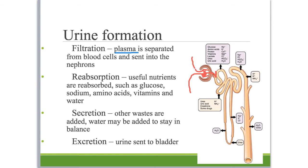The next step is reabsorption, where useful nutrients are reabsorbed back into the body. Glucose is a source of energy the body doesn't want to waste. Sodium, amino acids — important for building proteins — vitamins, and water are all reabsorbed. As we discussed with the digestive system, you produce almost two liters of gastric juices every day, and some of that water is reabsorbed as blood plasma passes through the kidneys.